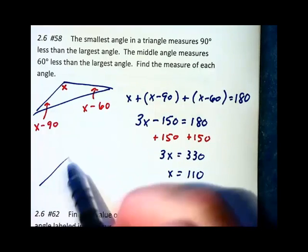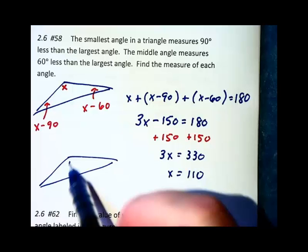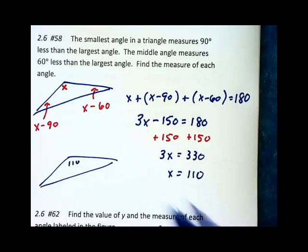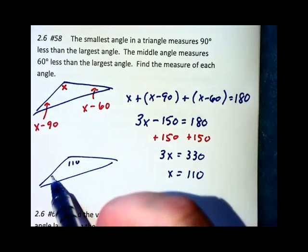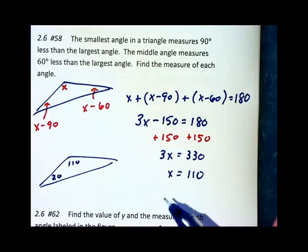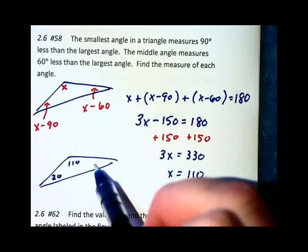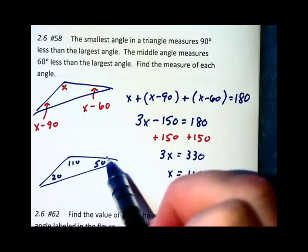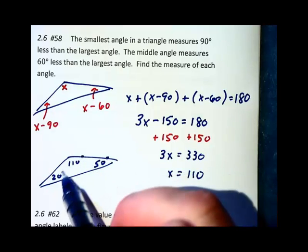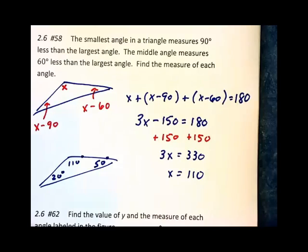So our three angle measures, not drawn to scale, are 110, 90 less than that, which is 20 degrees, and 60 less than that, which is 50 degrees. Let me put my little degree symbols in there. And there we go as our solutions.